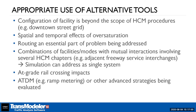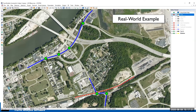One particular example is if you have an active rail crossing — you just cannot address that using the HCM method at all. Other things like ramp metering: at best you would only be able to grossly account for those using the HCM, so you may need to use simulation.